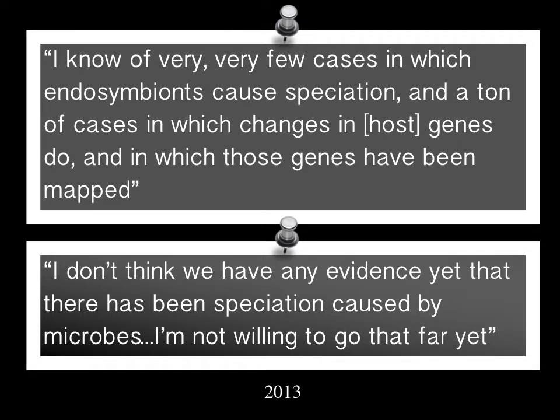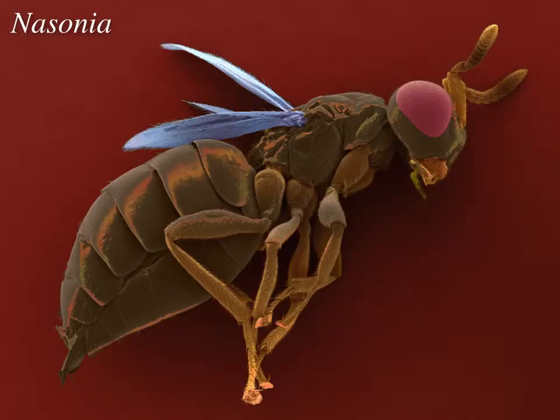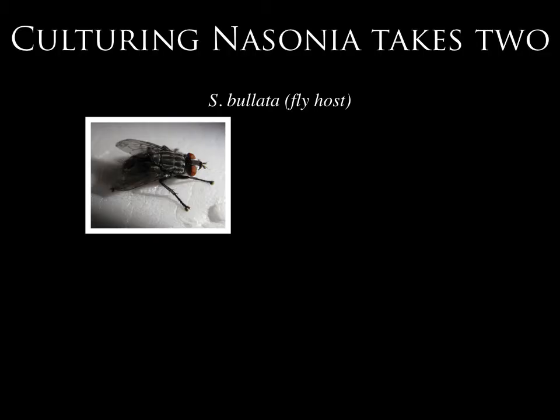This was surprising to me, because we have been studying this very topic in Nasonia for a couple of decades. Nasonia are tiny parasitic wasps — about two millimeters in size and metallic green — that parasitize flies like horse flies or blow flies. Nasonia is a fantastic model, though you have to work with two organisms since it's a parasitoid wasp.